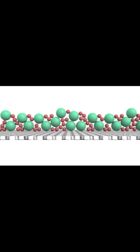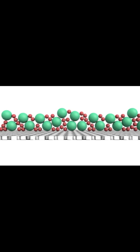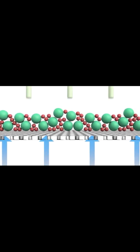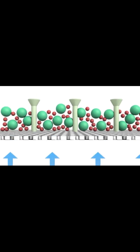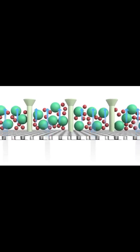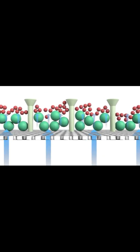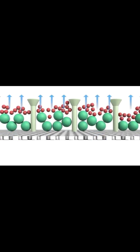Heavy seeds settle at the bottom and light seeds rise to the top because the terminal velocity of heavy grains is greater than the air velocity, so they remain at the bottom. For light seeds, the terminal velocity is less than the air velocity, so light material rises to the top position.